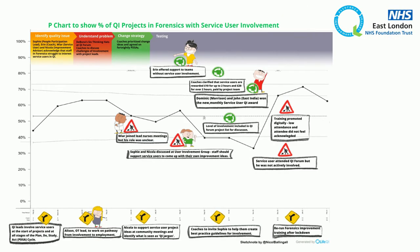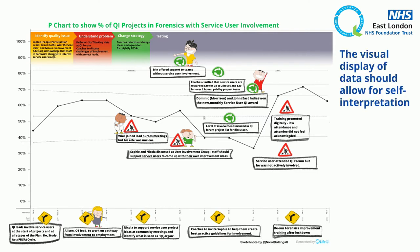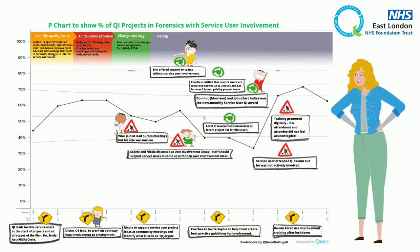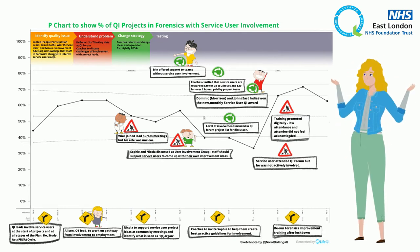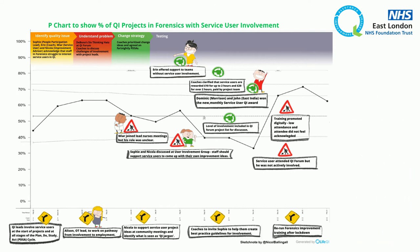So let's take this statistical process control chart as an example. The graphic shows how the Forensics Directorate worked to increase the percent of their projects that had service user involvement. Now Tufte's golden rule is for the visual display of data to allow for self-interpretation. So let's put this graph to the test — can you fully understand the story being told here? With so much going on, it's a little confusing. So we're going to apply Tufte's design principles to make the graph self-explanatory.